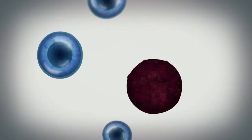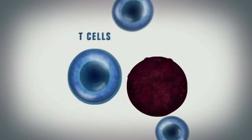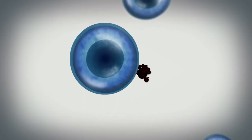In a healthy immune system, white blood cells called T cells patrol the body, identifying and destroying infected or potentially cancerous cells.